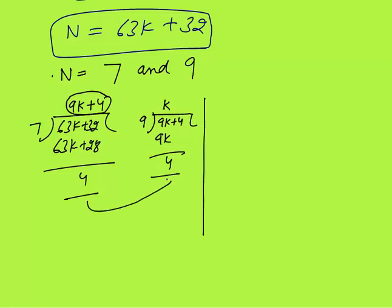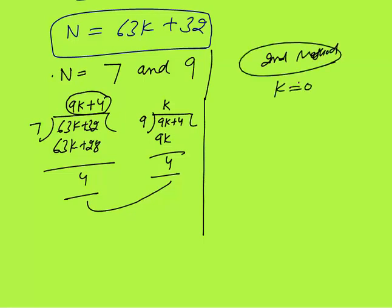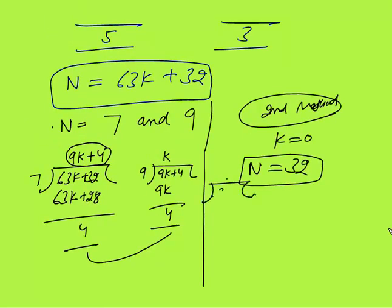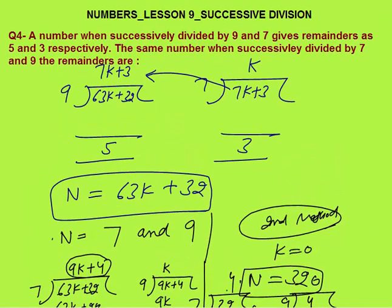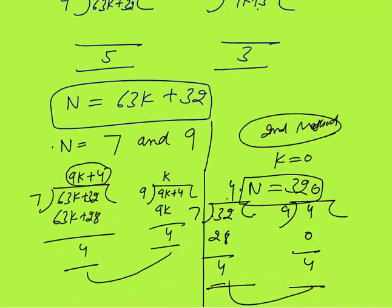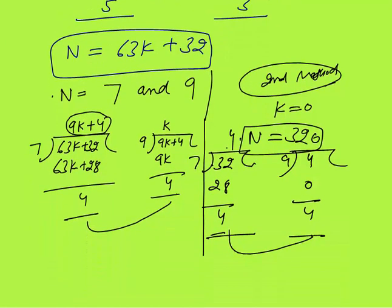So when the same number is divided successively by 7 and 9, the remainders are 4 and 4. The second method: simply put K = 0, so the number is 32. Divide 32 by 7: 7 times 4 is 28, remainder is 4. This 4 becomes the number; divide by 9: quotient is 0, remainder is 4. Answer is 4 and 4. In an exam, this takes less than a minute. Go backwards, assume quotient is K, find N = 63K + 32, then put K = 0. That was all about successive division, thank you.